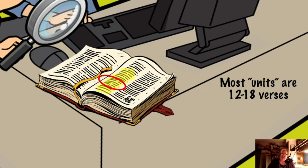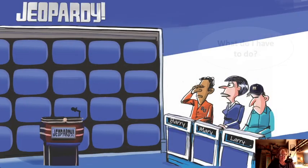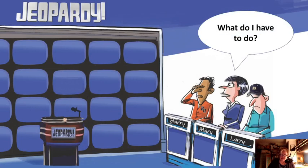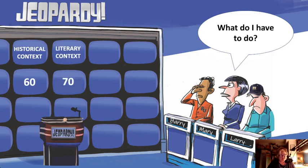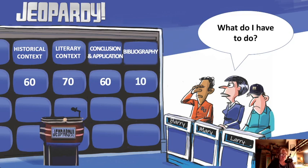So what do you have to do for this paper? The first category is historical context for 60 points. Then you're going to look at the literary context for 70 points. The third category, you're going to make a conclusion and some application of your verse for 60 points. And finally, you include your bibliography for 10 points. That's your paper in a nutshell.